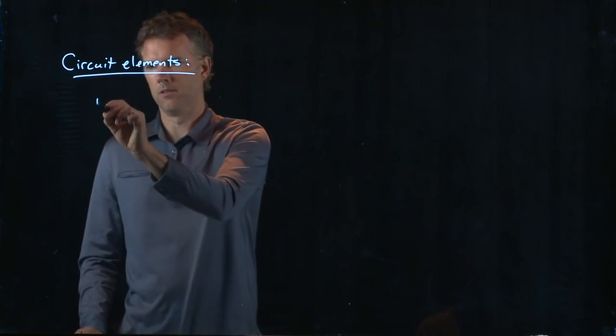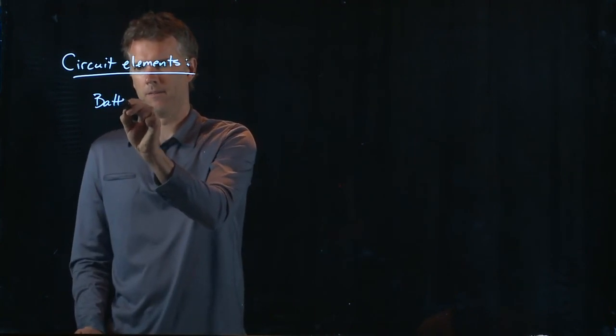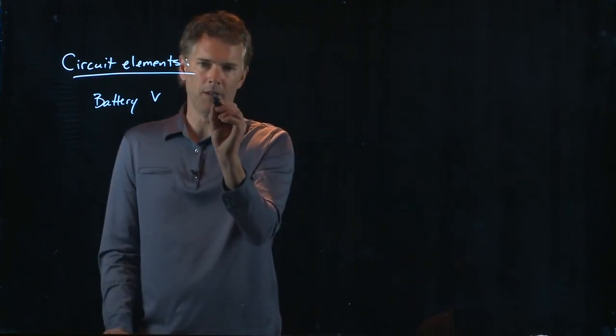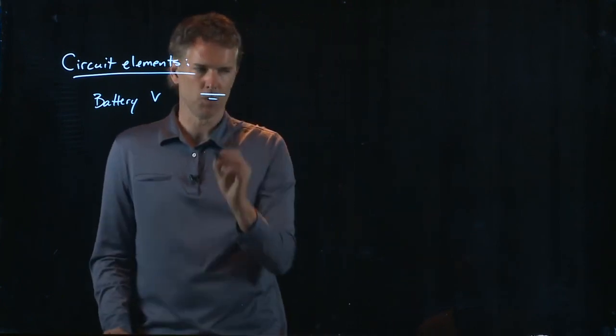One of course is the battery. Battery we write with a V and the way you write it in a circuit is a long line and a short line.